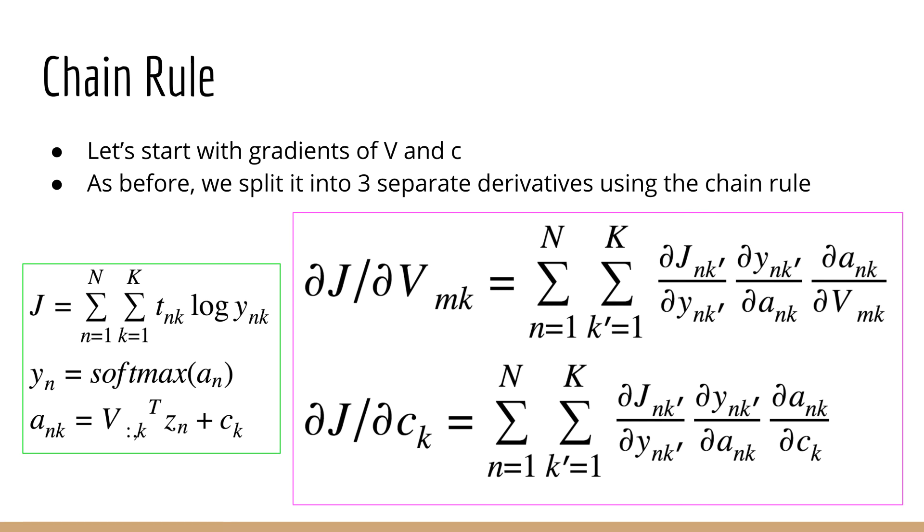Okay, so let's get right to it. We know the steps. Using the chain rule, we can find out which derivatives we have to solve for, and then multiply them all together. So let's start with v and c. Luckily, because we already did this for logistic regression, it's very easy to just copy what we had before. Remember that this is because we have composite functions. J is a function of y, y is a function of a, and a is a function of v and c.